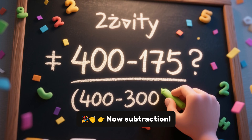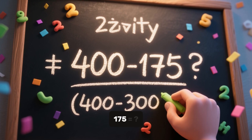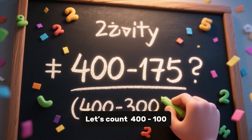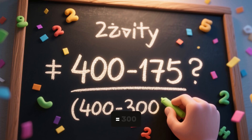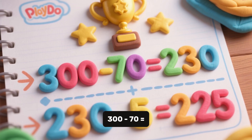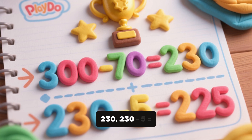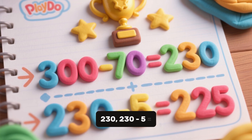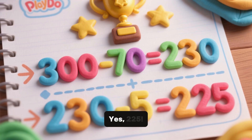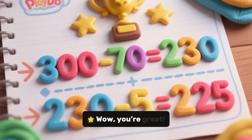Now subtraction. 400 minus 175 equals... Let's count! 400 minus 100 equals 300. 300 minus 70 equals 230. 230 minus 5 equals 225. Yes! 225! Wow, you're great!